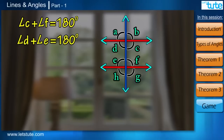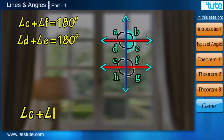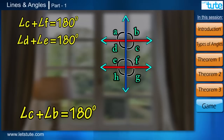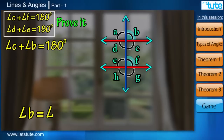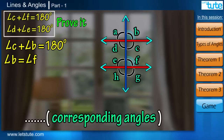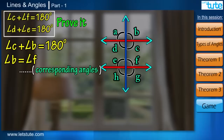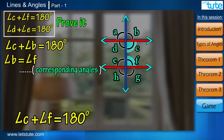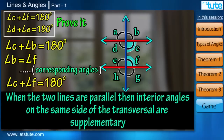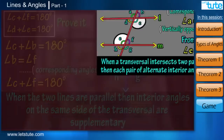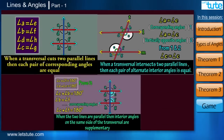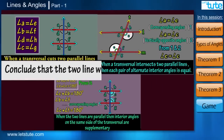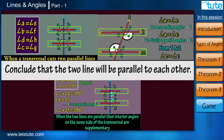There is also a property about interior angles which says that when two lines are parallel, the interior angles on the same side of the transversal are supplementary — meaning angle C plus angle F equals 180 degrees, and angle D plus angle E equals 180 degrees. The explanation: angle C plus angle B equals 180 degrees, and since angle B equals angle F (corresponding angles), we conclude that angle C plus angle F equals 180 degrees, meaning they are supplementary. The converse of all these properties is also true: if any pair of these angles is equal, it concludes that the two lines are parallel to each other.